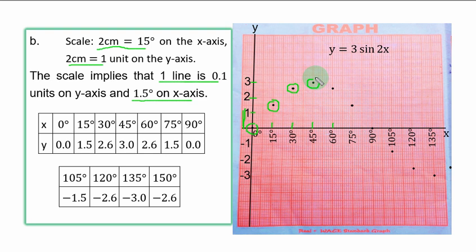When x is 60°, y is 2.6 somewhere here. When x is 75°, y is 1.5. When x is 90°, y is 0. You plot that point directly on the x-axis.